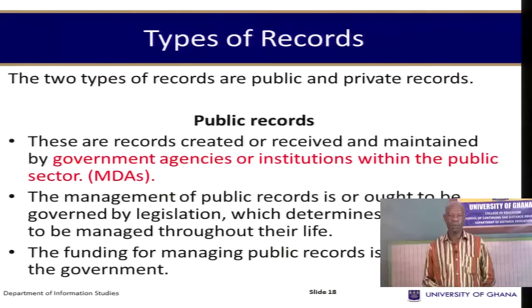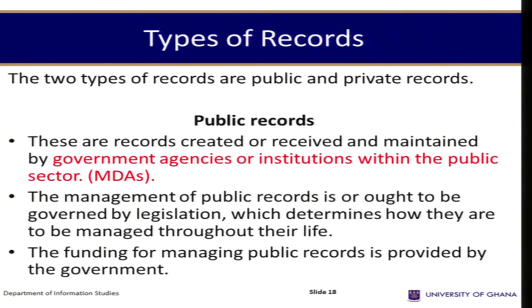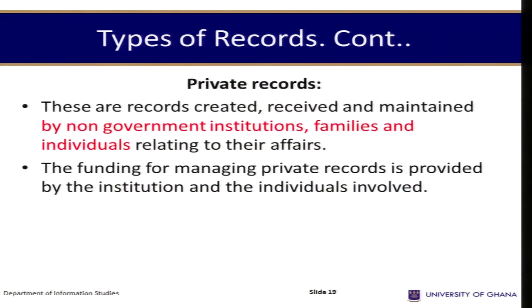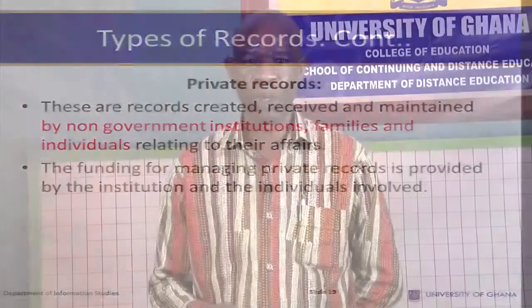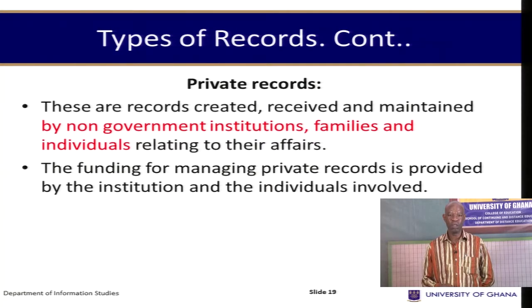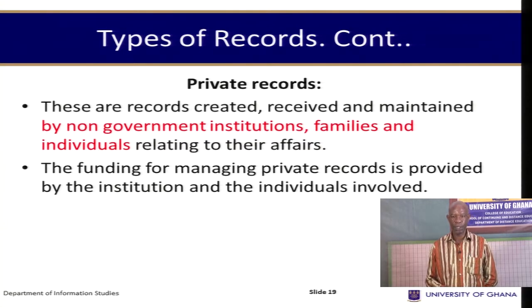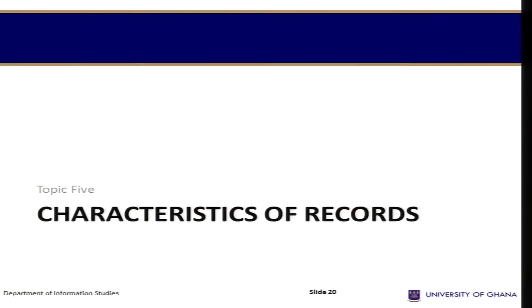The two types of records are public and private records. Public records are records created, received, and maintained by government agencies or institutions within the public sector. They are called public records because public institutions are funded by the taxes that citizens pay, making the records generated a form of public good. Private records are created, received, and maintained by non-government institutions, families, and individuals relating to their affairs, funded by shareholders. They can be made accessible with permission to whoever needs to use them.